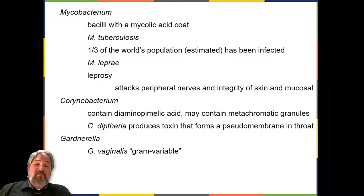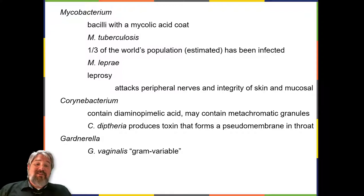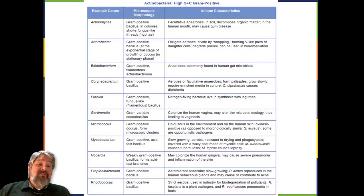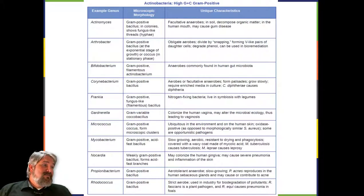Based on its genome, Gardnerella vaginalis is placed into the high-GC Gram-positive group. G. vaginalis can cause bacterial vaginosis in women. Symptoms are typically mild or even undetectable, but can lead to complications during pregnancy. This table summarizes the characteristics of some important genera of actinobacteria.